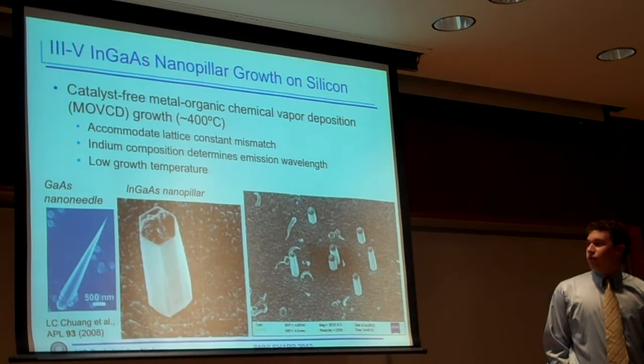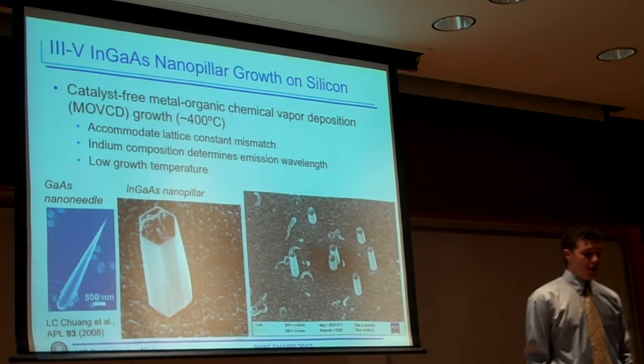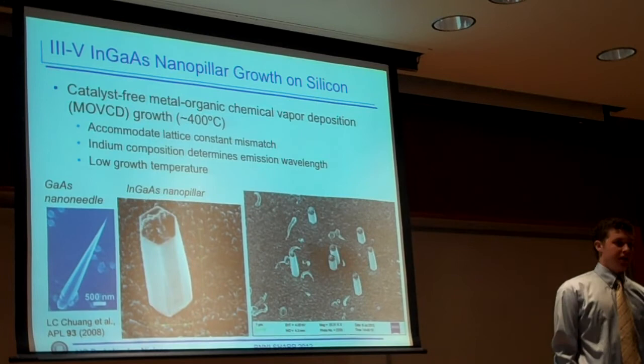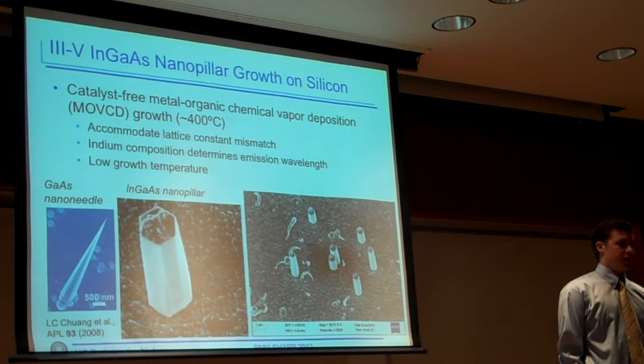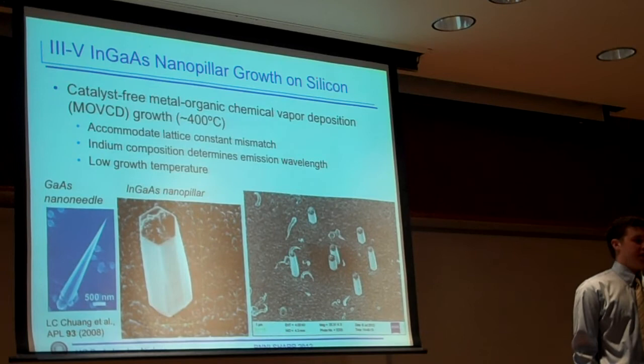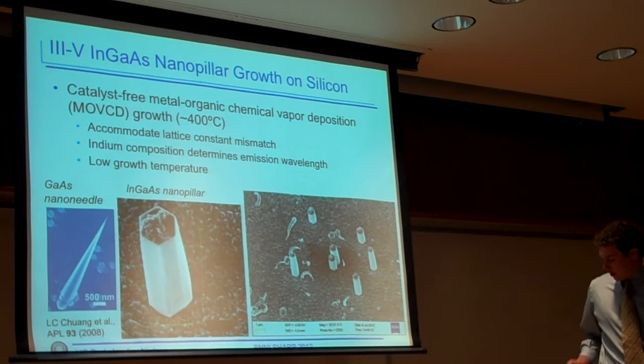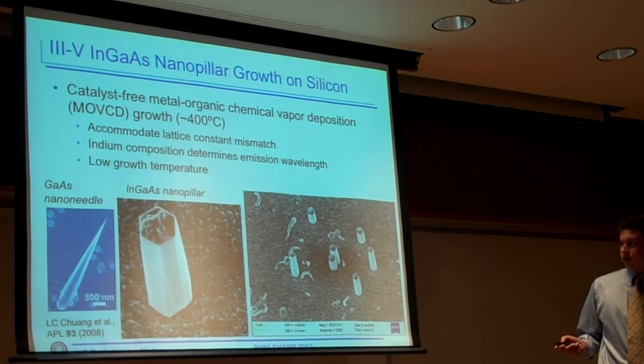We grow what are called InGaAs nanopillars. The gain mediums in most lasers are created by 3-5 materials. Our 3-5 material is indium gallium arsenide. That's what InGaAs stands for. How we grow these nanopillars, I wasn't actively in the growth program, but they do grow them by metal-organic chemical vapor deposition, which essentially is doping a substrate and having the chemicals align themselves on the substrate into these certain structures. In previous papers, people have created gallium arsenide needles as they grow in a hexagon structure, or hexagonal.